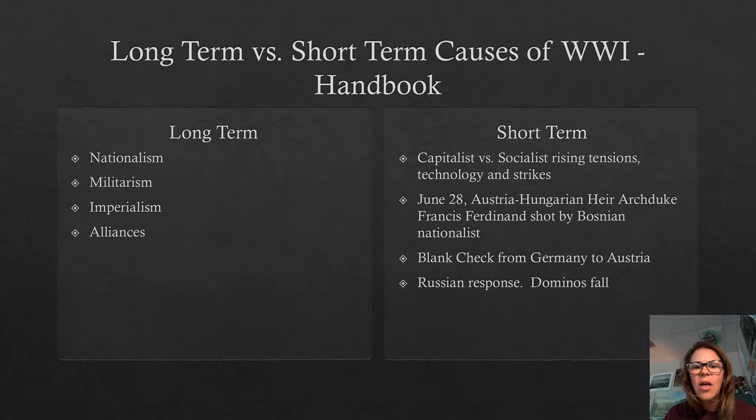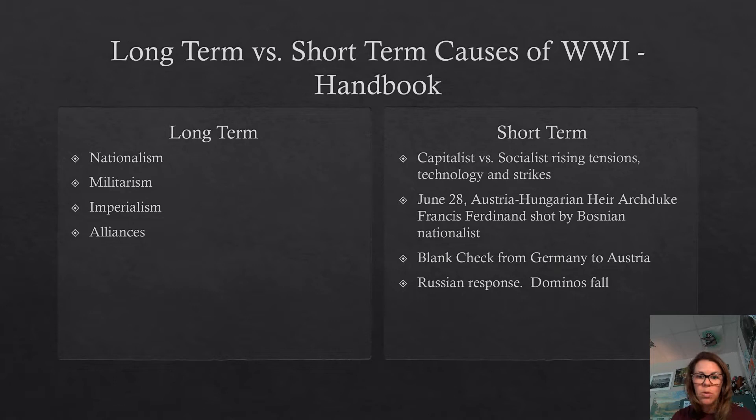Each country competed to show they were better than everybody else and that other countries didn't have the right to control their individual futures. Germany thought the Germans were the best and destined to control the world — same with Britain, Spain, and others. Archduke Ferdinand and his wife were shot by a Bosnian Black Hand nationalist, and that is the short-term trigger that starts World War One. Those alliances were already formed and people were ready to prove their militaristic might, but that assassination is really just a small reason as to why World War One actually took place.